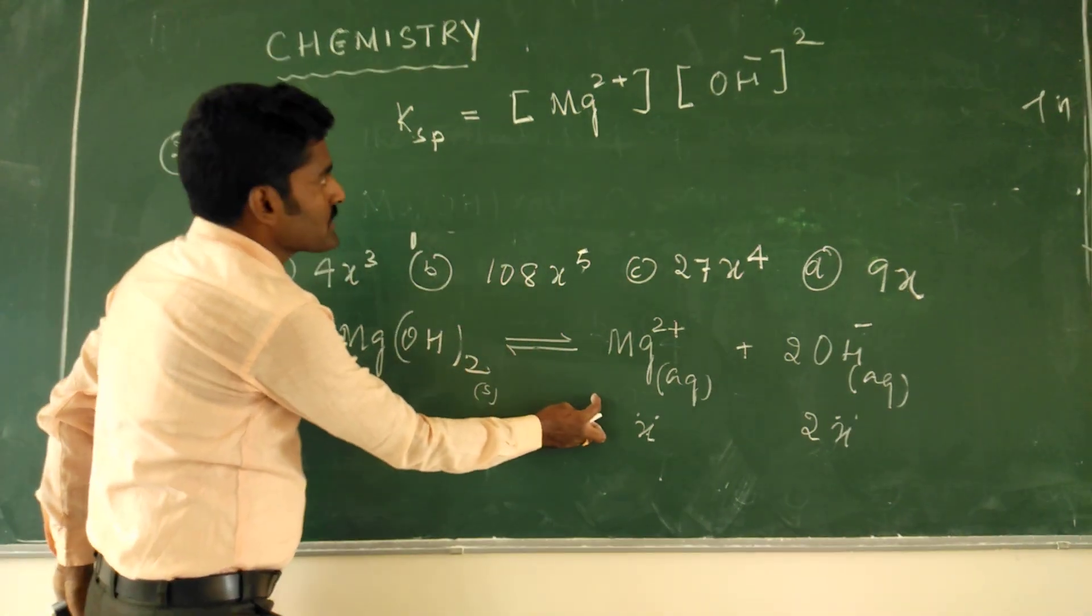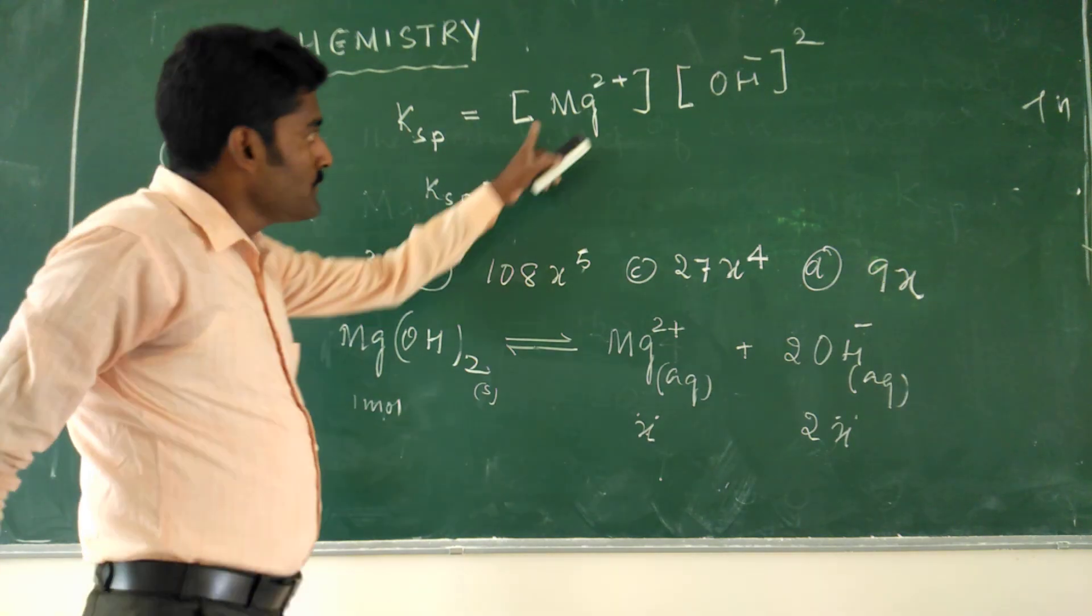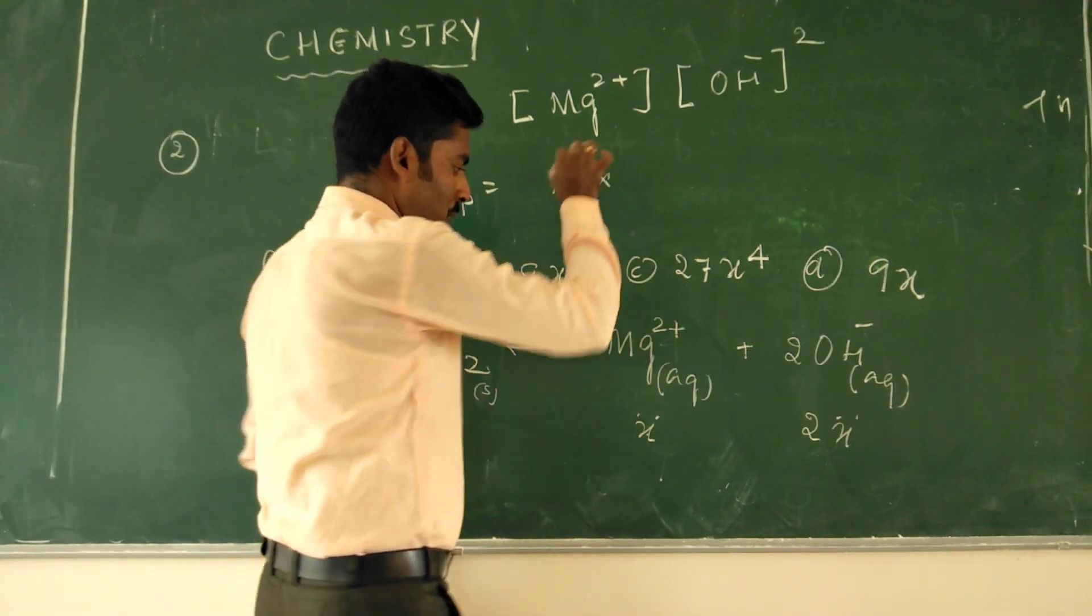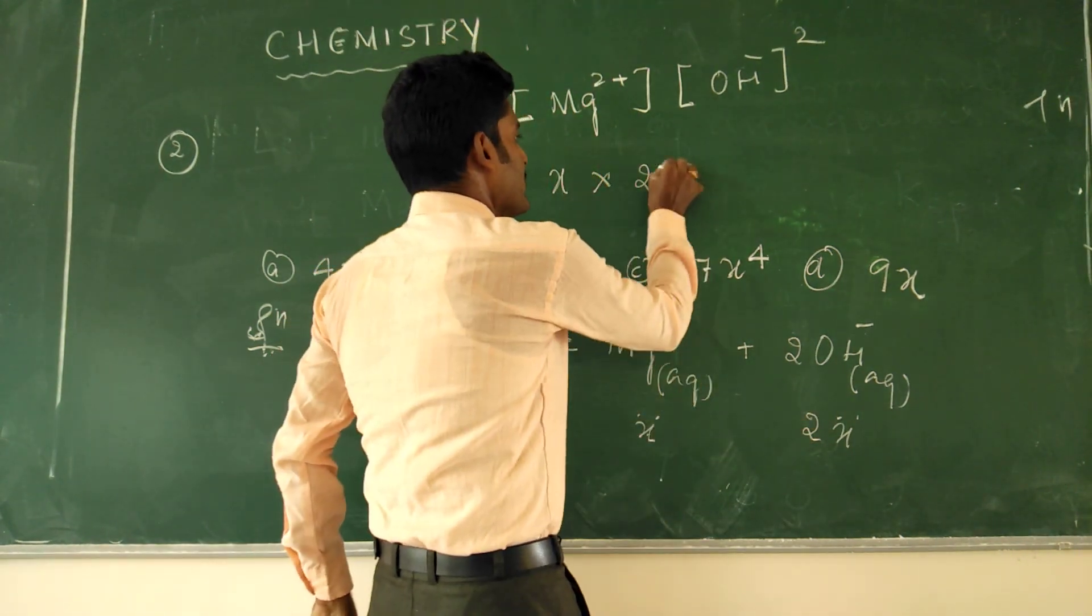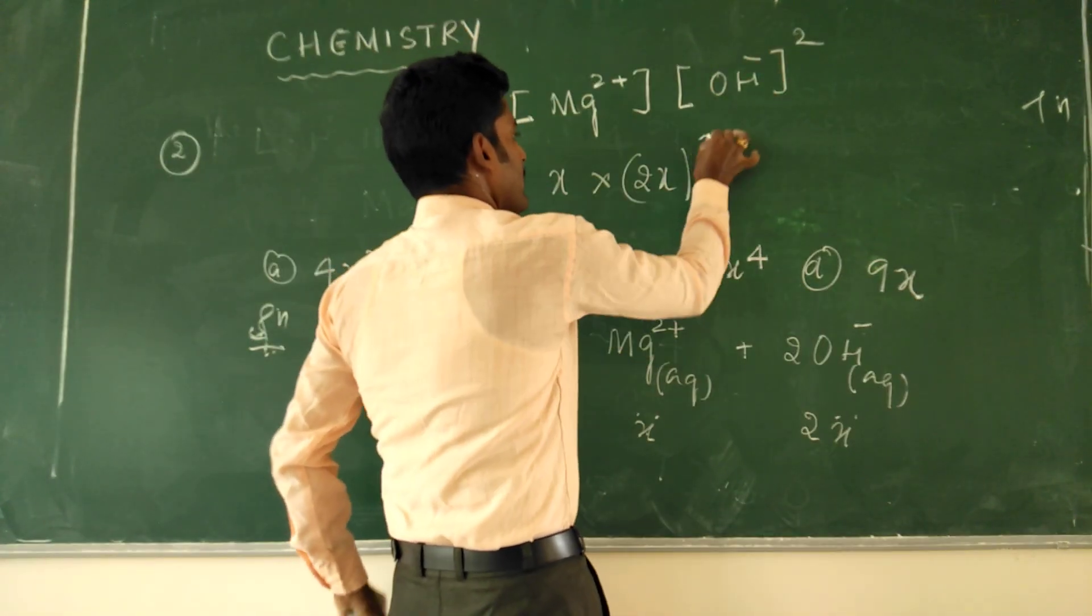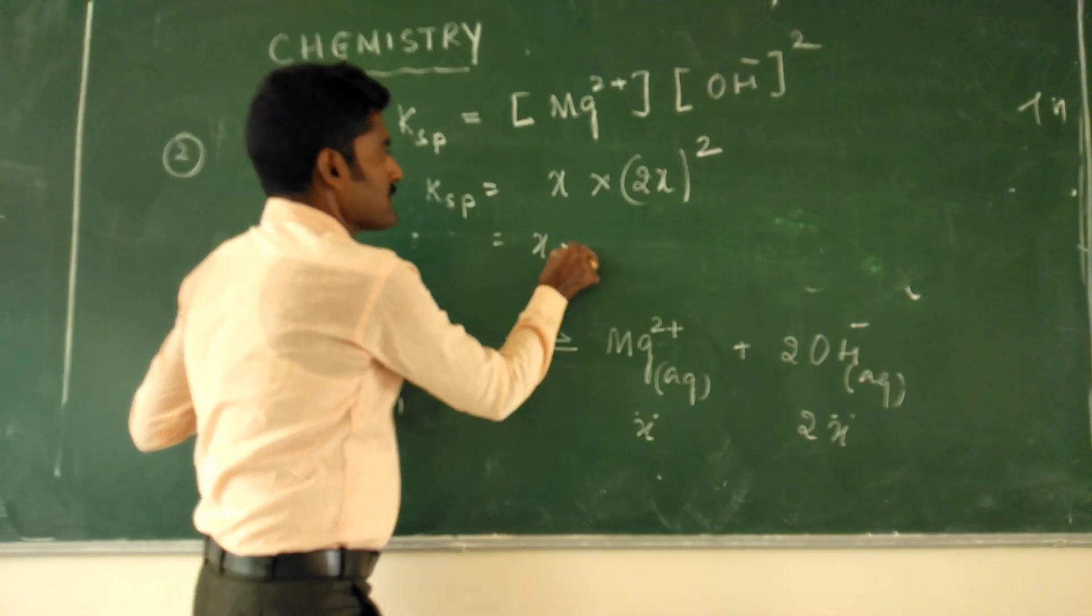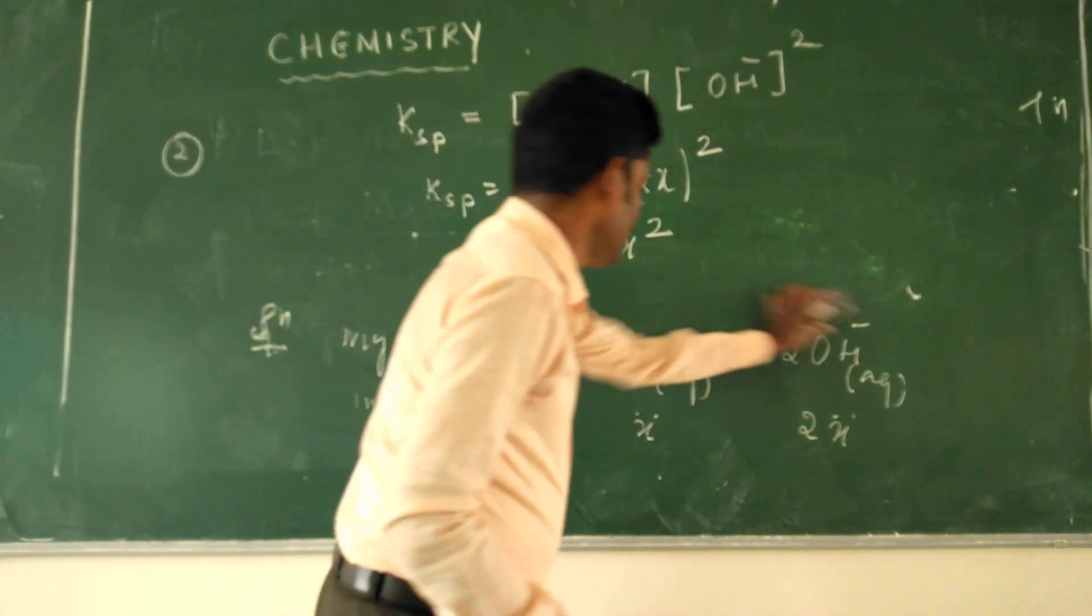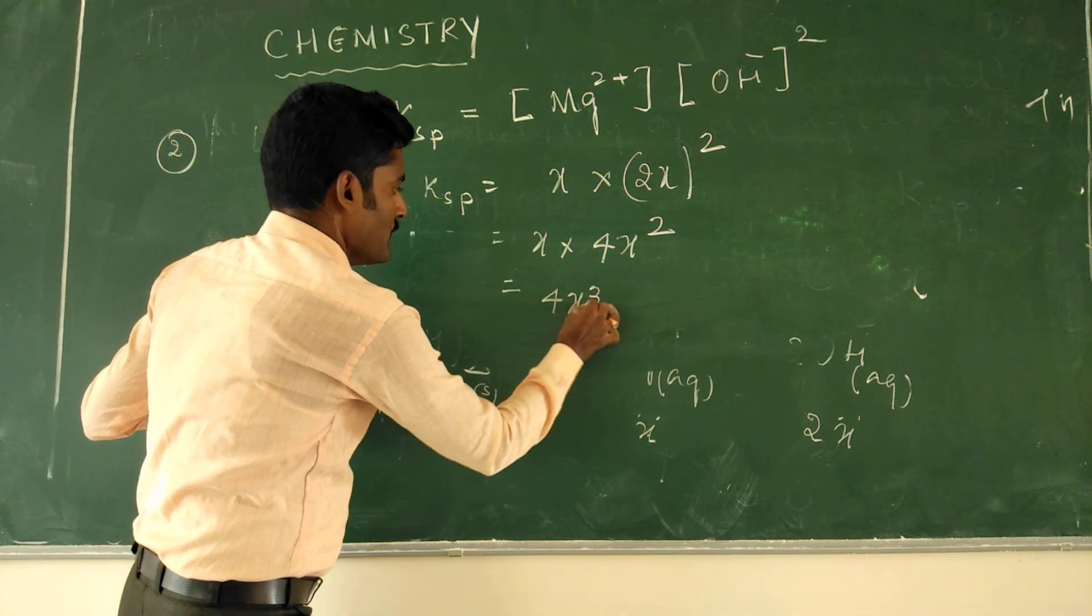So then according to the chemical equation, KSP is equal to Mg2+ concentration is X, into OH- concentration is 2X, squared. So then that is equal to X into 4X square and that is equal to 4X cube.